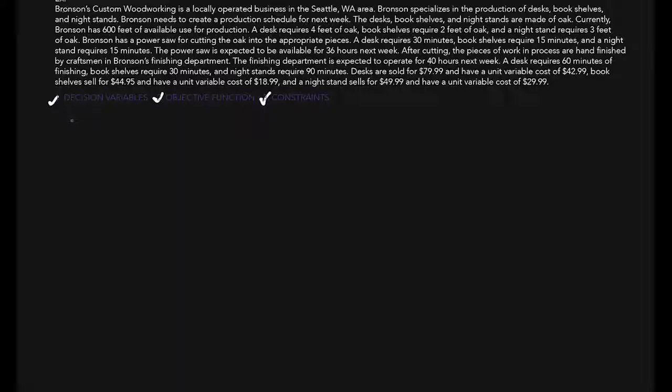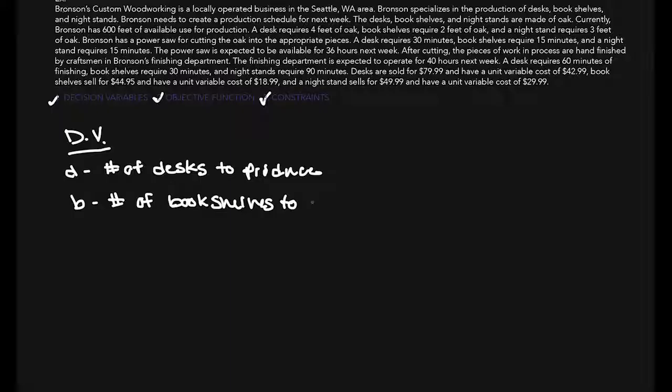They produce desks, so I'm going to do DV as decision variable. And we've got number of desks to produce. We have B that I'll use as a variable for bookshelves, number of bookshelves to produce. And nightstands, number of nightstands.